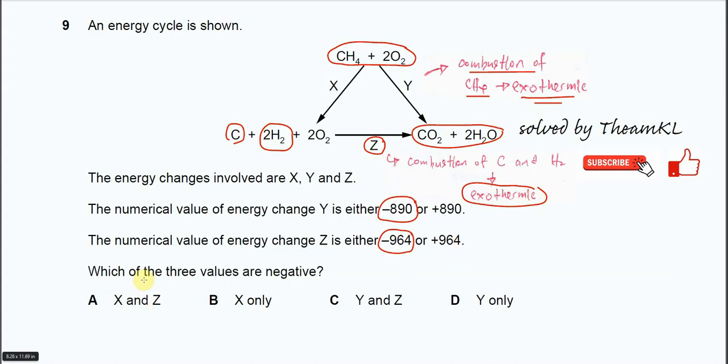And which of the three values are negative? The answer choices only show X and Z, X only, Y and Z, or Y only. There is no X, Y, Z altogether. Therefore we are quite sure the answer is Y and Z.